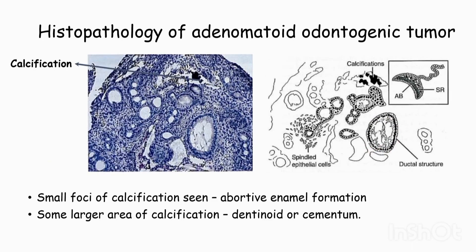Small foci of calcification are seen, which is due to abortive enamel formation. In some lesions there are larger areas of calcification, which is due to dentinoid or cementum.